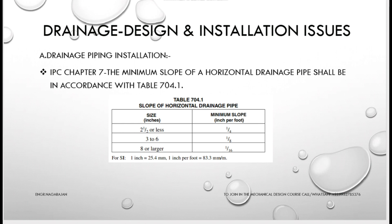As per IPC (International Plumbing Code), the minimum slope of a horizontal drainage pipe shall be in accordance with Table 704.1. For pipe sizes 2.5 inches and less, the minimum slope is 1/4 inch per foot. For 3 to 6 inch pipes it is 1/8 inch per foot, and for 8 inch and larger it is 1/16 inch per foot.